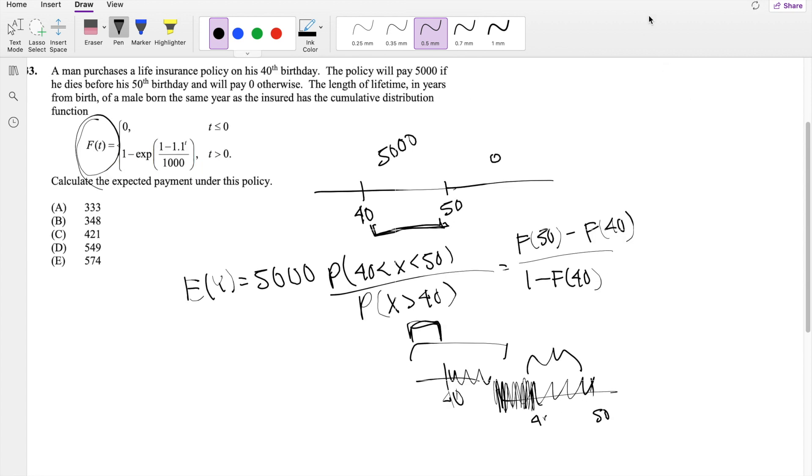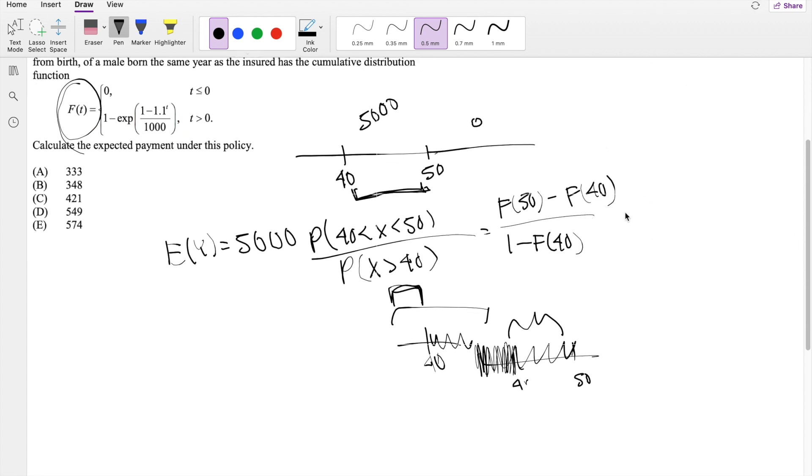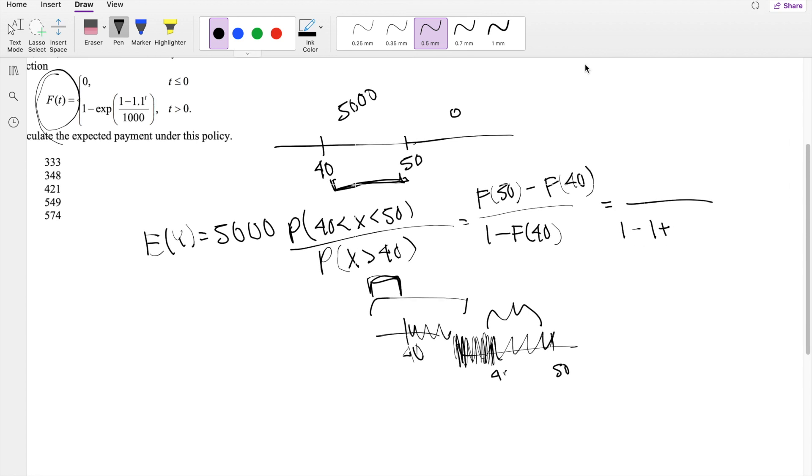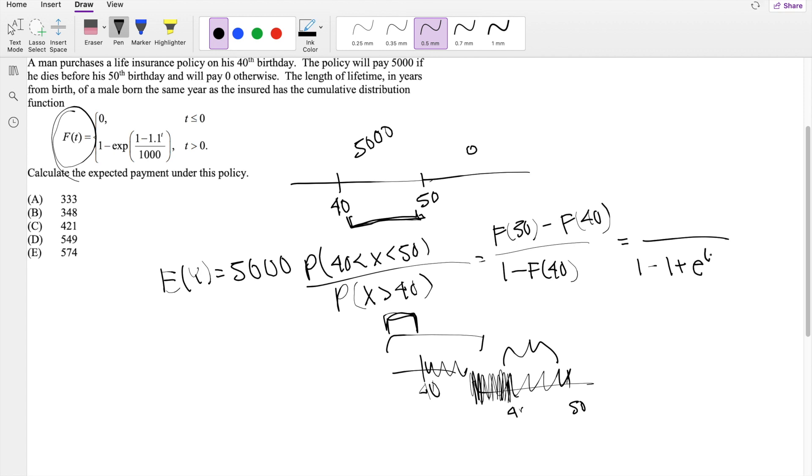Okay, so now this is a pretty simple problem then. The denominator is going to get 1 minus 1. 2 negatives make a positive. E to the 1 minus 1.1 to the 40 divided by 1,000.